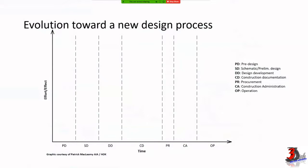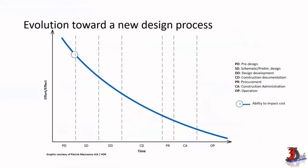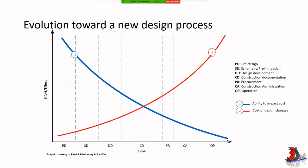By embracing BIM, civil engineers have a unique opportunity to lead the industry's transformation to a more efficient way of working. BIM allows for earlier design insight and decision making, allowing changes to be made when they are less costly. Because BIM automates the production and coordination of much of the construction documentation, civil engineers can spend more time on design and less time on tedious, resource-intensive tasks. On screen we have a MacLeamy curve — the blue line represents the ability to impact cost, while the red line represents the cost of design changes.